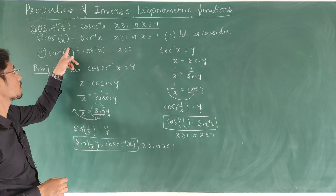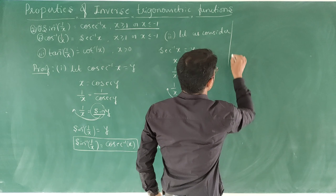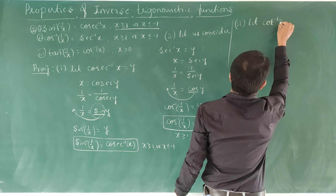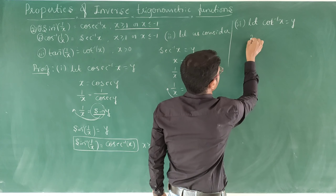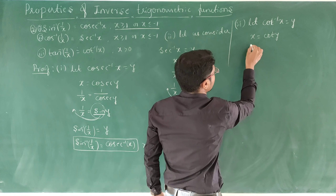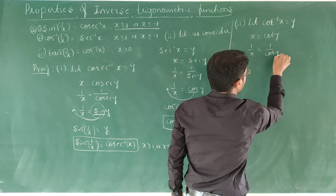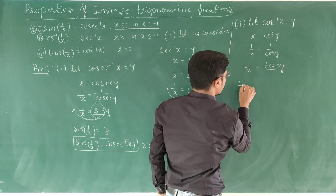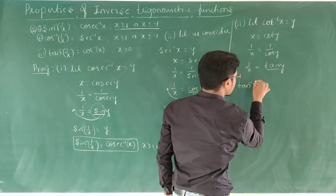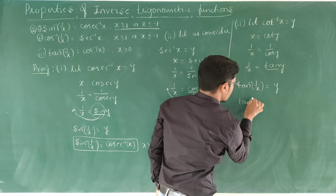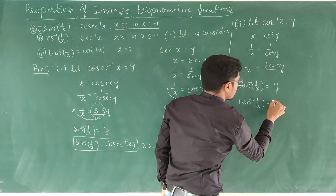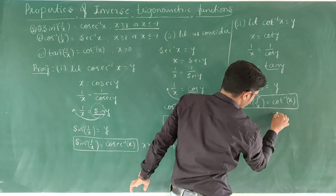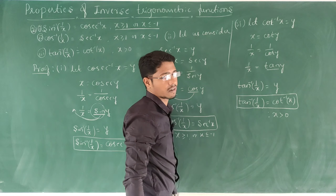For the third one: tan inverse of 1/x equal to cot inverse of x. Let cot inverse of x equal to y, so x equal to cot y. Then 1/x equals 1/cot y. Now 1/cot y is tan y. Taking tan to this side, it becomes tan inverse of 1/x equal to y, which is cot inverse of x. This result holds when x is greater than 0.